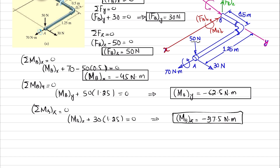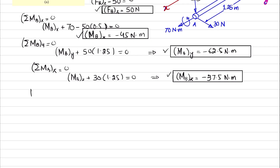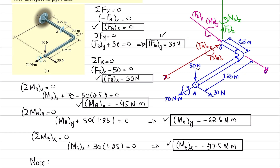These are all the internal loadings — three forces and three moments at point B, which is the answer to the question. The negative values indicate that the assumed directions were incorrect. The moments that were assumed counterclockwise about Z and X should actually be clockwise in order to maintain equilibrium.